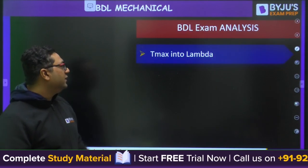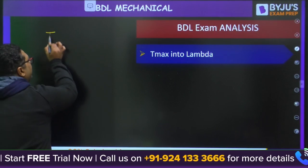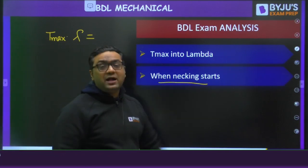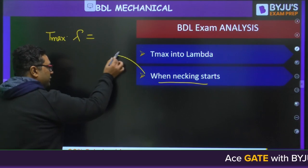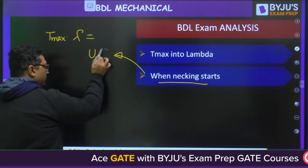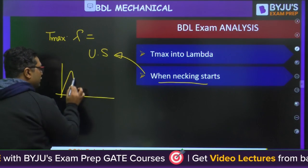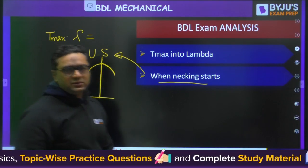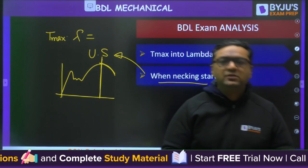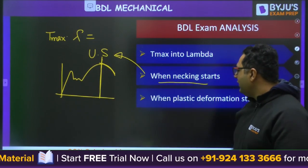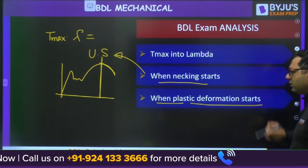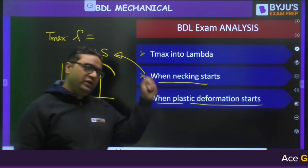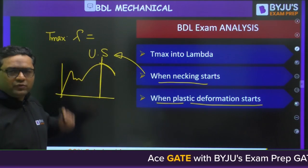Next topics include T_max times lambda — this is from heat transfer, related to Wien's displacement law. They also asked when necking starts in the stress-strain diagram. At ultimate stress is where necking begins, so the options included ultimate stress and other choices. Similarly, a question was asked about when plastic deformation starts — plastic deformation starts after the elastic limit, once the elastic limit is crossed. This is also from the stress-strain diagram.